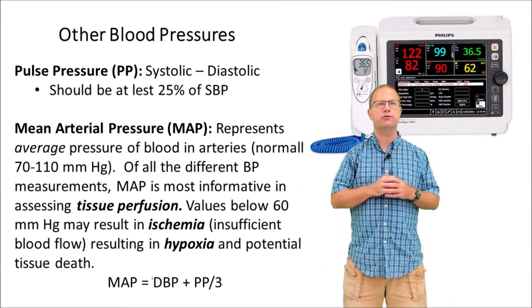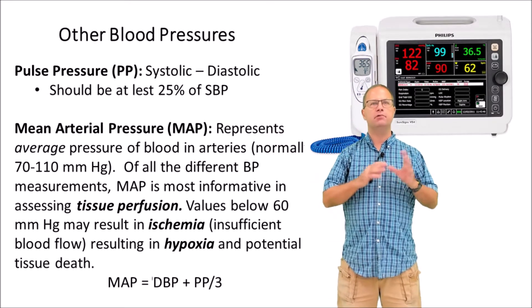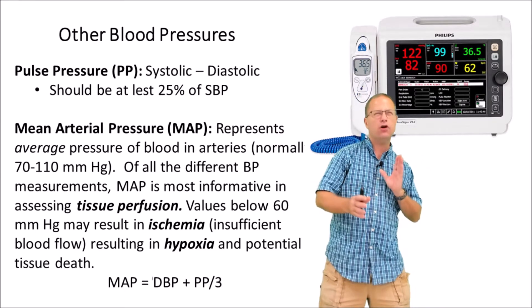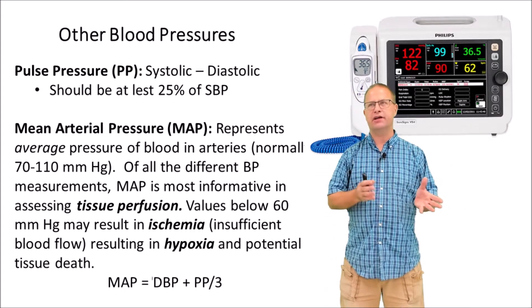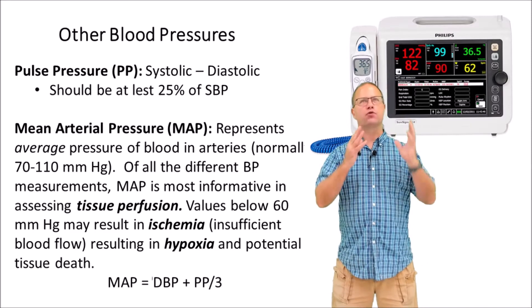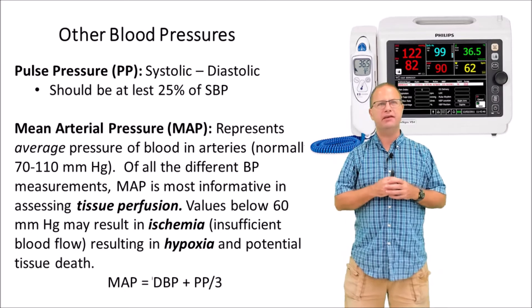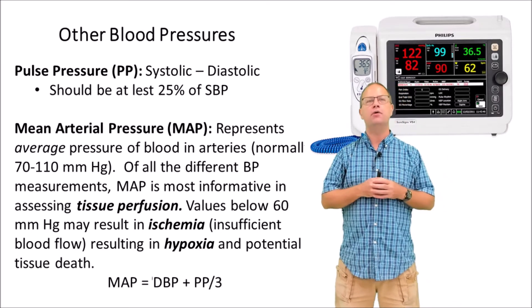More importantly, however, we have something called mean arterial pressure or MAP. MAP represents the average pressure of blood in the arteries, and it's normally around 70 to 110 mmHg. If you want to memorize one number, memorize 90. 90 is great for mean arterial pressure. If it's lower than 90, we start to get concerned a little bit, and if it's lower than 70, we get really concerned.